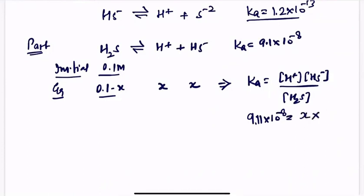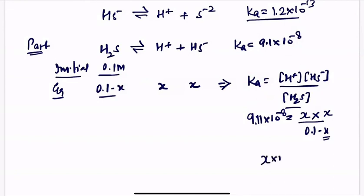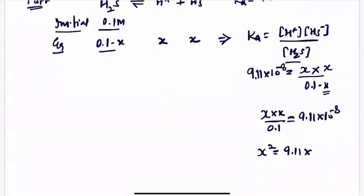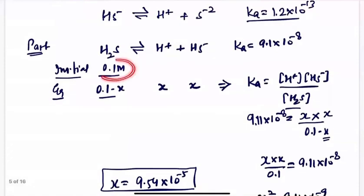H⁺ ion concentration is x, HS⁻ ion concentration is x, and H₂S concentration is 0.1 − x. We will neglect x because the Ka value is very small, so dissociation is negligible and x will be neglected in comparison to 0.1. So we get x² / 0.1 = 9.1 × 10⁻⁸, so x² = 9.11 × 10⁻⁹, and x = √(9.11 × 10⁻⁹) = 9.54 × 10⁻⁵. This is the concentration of HS⁻ ion produced by 0.1 molar H₂S when dissolved in water.